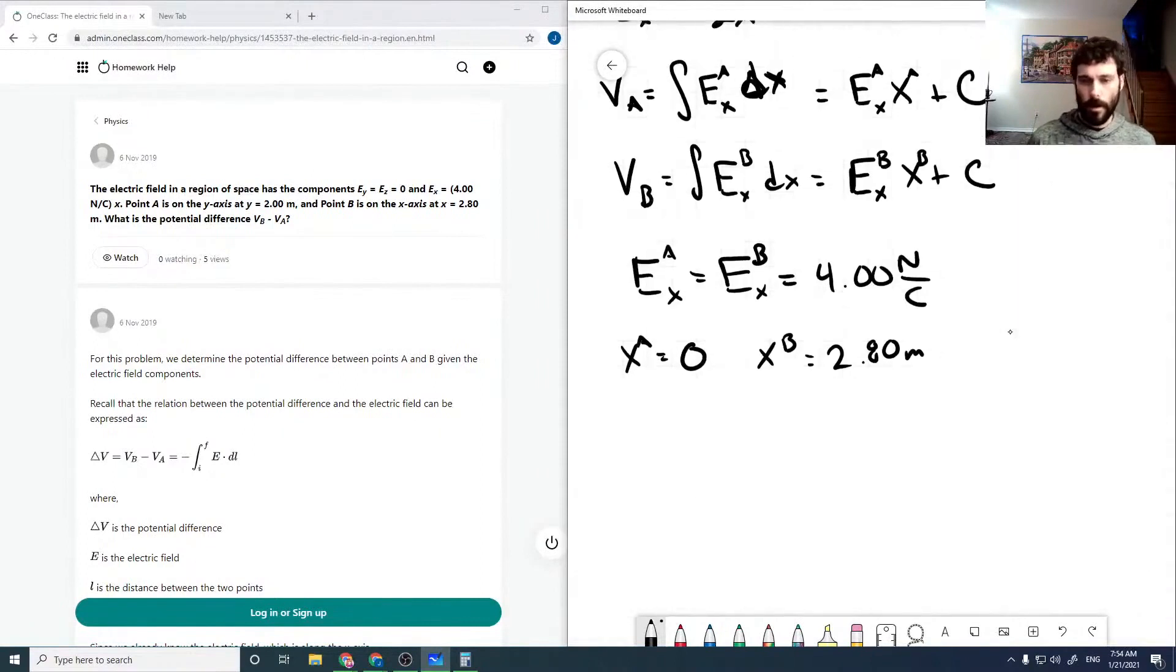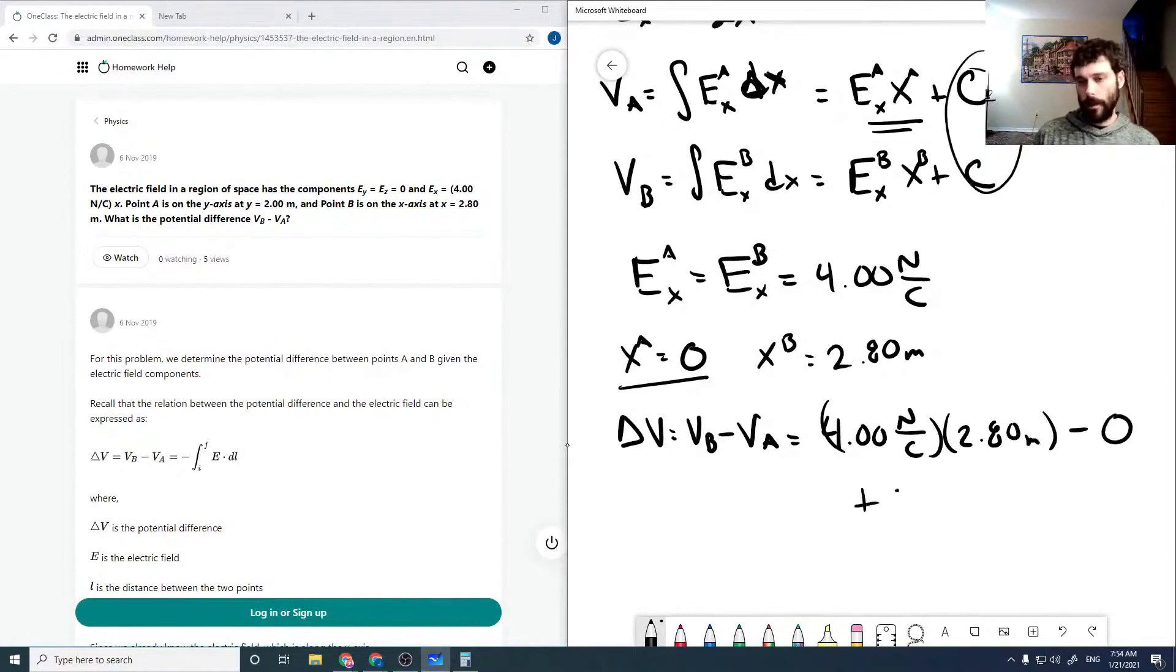So our delta V, which is V_B minus V_A, is equal to just this 4.0 newtons per coulomb times 2.80 meters. And we can see that because X_A is 0, that's just minus 0. And then we can add in our integration constants, but we can see that that'll be plus C minus C, which will cancel.